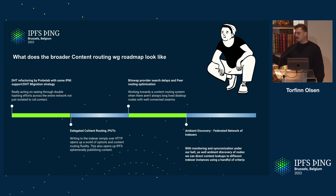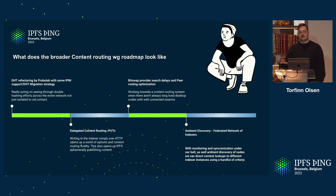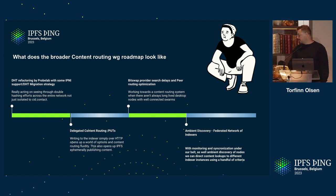Some of the closer-term stuff: Guy mentioned he's working on DHT refactoring — a broader way to look at that is the optimizations of the DHT. You also heard Masi discuss optimizing the speed and efficiency with which the IPNI can leverage the DHT. There's a broader conclusion that if we take all of these sources and optimize them, we can ultimately leverage the DHT even better than we do now.